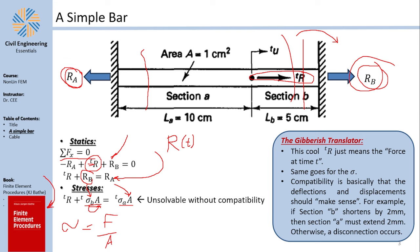The pre-superscript T means the force at time step T. You might ask why not write R(T) normally — first, this notation looks better, and second, the subscript will later be reserved for other things like elements A and B. So a pre-superscript makes sense. Anything with a pre-superscript T means 'at time T.'